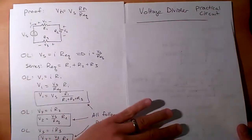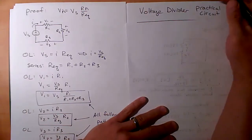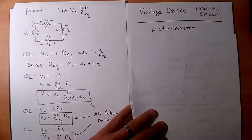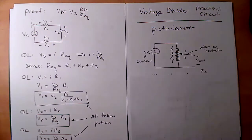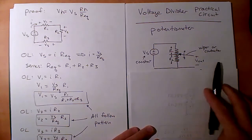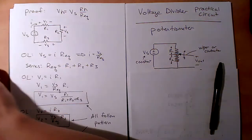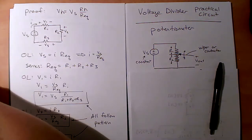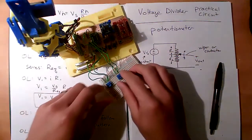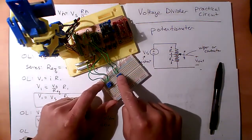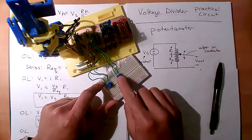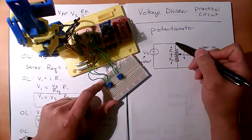Here's where the voltage divider is used in a very practical circuit: the potentiometer. You've all seen knobs and dials — here's one from a robotics project. This potentiometer has three terminals, and the middle terminal outputs a signal to a microcontroller.